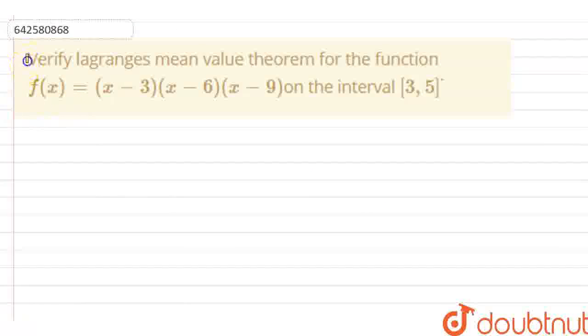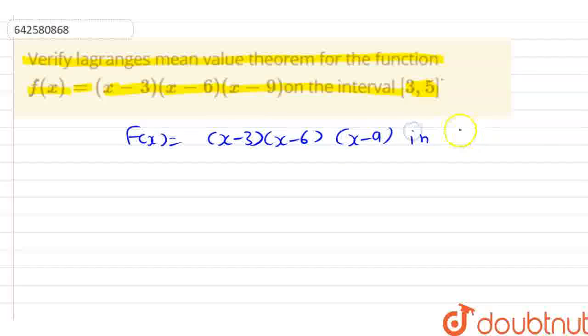The question is, verify Lagrange's mean value theorem for the function f(x) = (x - 3)(x - 6)(x - 9) on the interval [3, 5]. So, here we have f(x) = (x - 3)(x - 6)(x - 9) in the interval [3, 5].